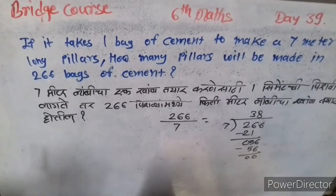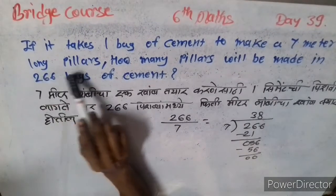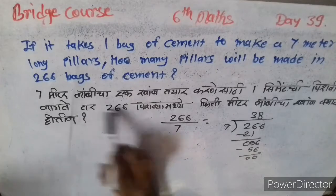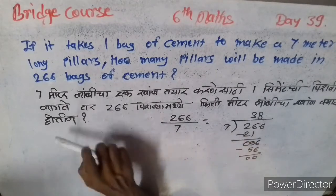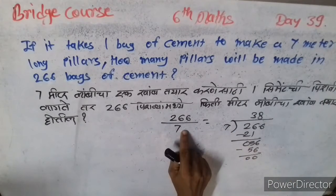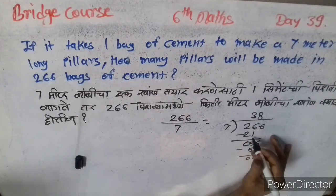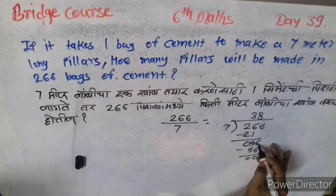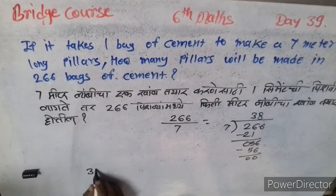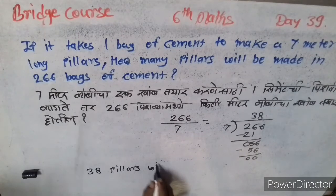Fourth example: If it takes one bag of cement to make a 7-meter long pillar, how many pillars will be made from 266 bags of cement? Division: 266 divided by 7. 7 times 3 is 21, 26 minus 21 is 5, bring down 6 to get 56, 7 times 8 is 56, remainder 0. So 38 pillars will be made.